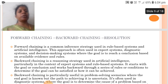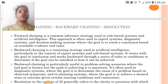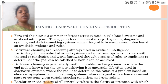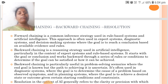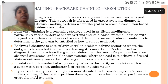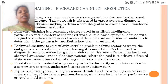Forward chaining is a common inference strategy used in rule-based systems in AI, often used in expert systems, diagnostic systems and decision-making systems where the goal is to reach a conclusion based on available evidence and rules. Backward chaining is a reasoning strategy used in AI particularly in expert systems and rule-based systems. Resolution in AI generally refers to the clarity or precision with which a system can perceive, understand or represent information.